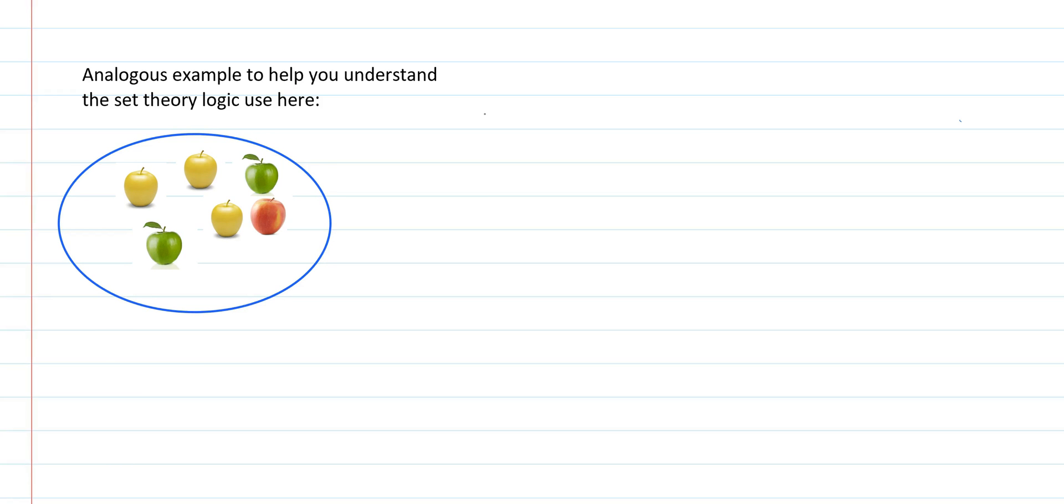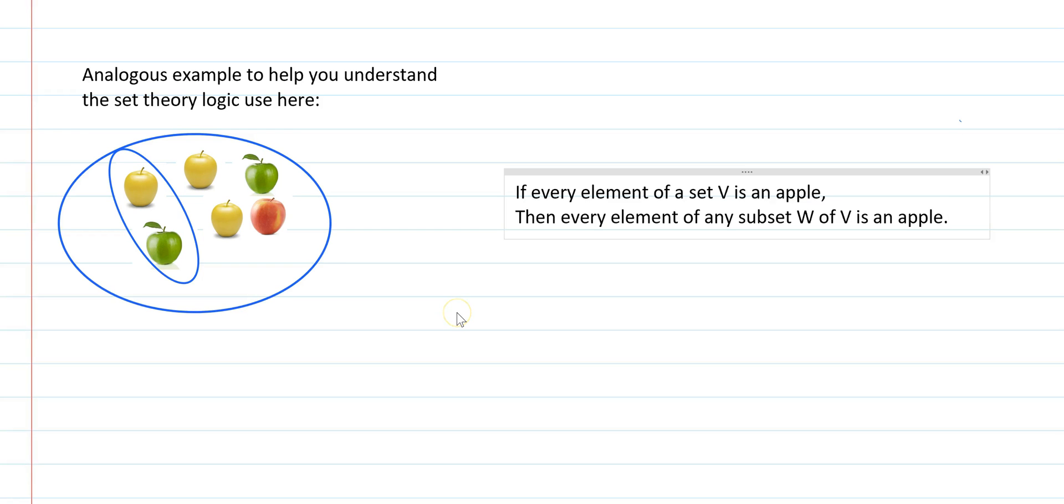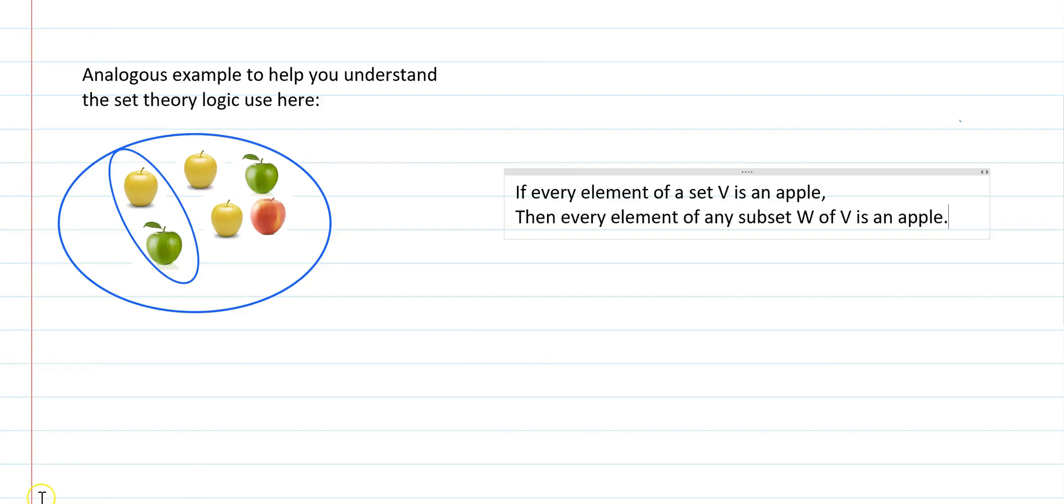If you're still trying to get used to the set theory logic that we're using here, think of this analogy. Let's say I have a set that contains these apples. There are different types of apples, like Golden Delicious, Fuji, or Granny Smith. But it's true that every element in the set is an apple. So if I'm taking any subset of this set, let's say I take this subset of these two apples, then it's true that every element of this subset is still an apple.